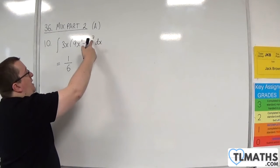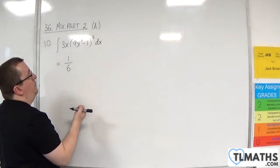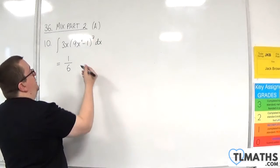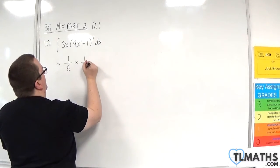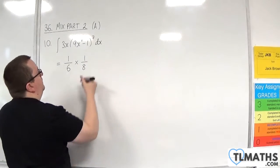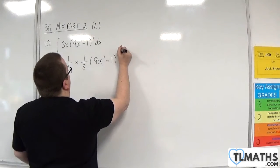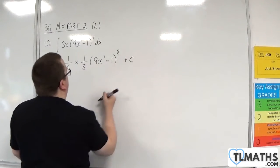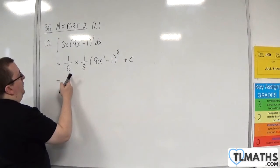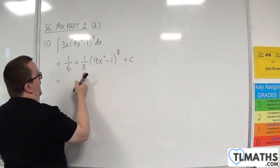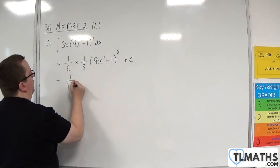In the process, we're also going to be adding 1 to the power and dividing by the new power. So we're going to be dividing by 8, which is the same as multiplying by 1 over 8. So we're going to have the 9x squared, take away 1 to the power of 8, plus c. So 1 sixth times 1 over 8 is 1 over 48.